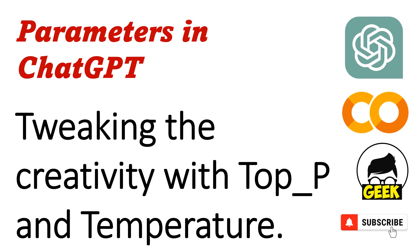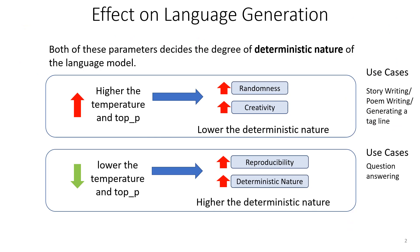The parameters we are discussing here are Temperature and Top_P. So in order to get an idea, first let's see what is the effect of these parameters to language generation. Basically, both of these parameters decide the deterministic nature of a language model.